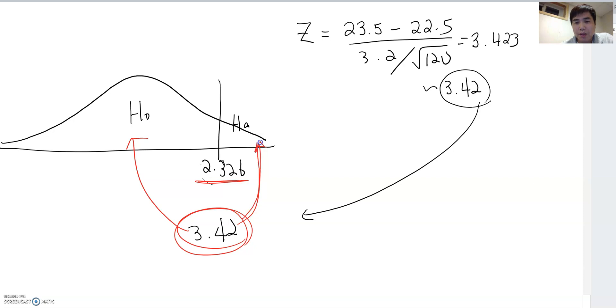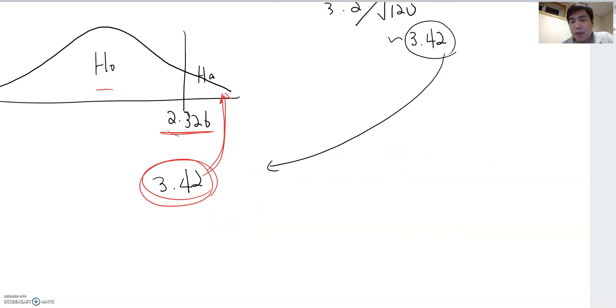Therefore, now we can reject H0. Again, why we can reject H0? Because the sample Z-score belongs to HA, so H0 is incorrect. That's why we can reject H0.